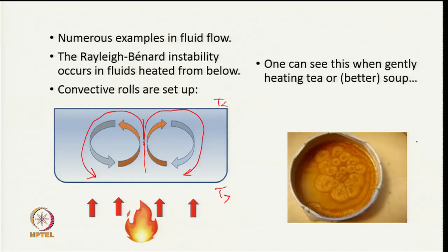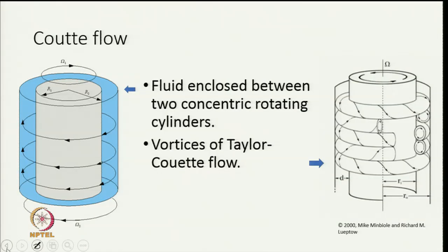When you are making one of these packaged soups and boiling it, you find that these convective rolls are set up and the image of these convective rolls on the surface turns out to be these hexagonal patterns that are visible in this particular cup. These are so common that one finds many such images on the internet.